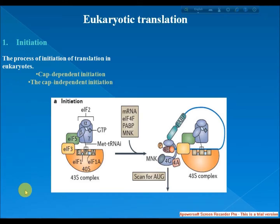The ribosome can be trafficked to the start site by ITAFs — IRES trans-acting factors — bypassing the need to scan from the 5' UTR. This method of translation has been recently discovered and is important in conditions that require translation of specific mRNAs despite cellular stress or the inability to translate most mRNAs, such as factors responding to apoptosis and stress-induced responses.